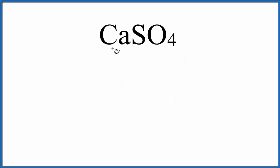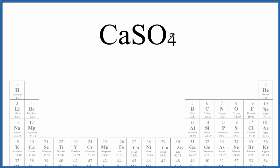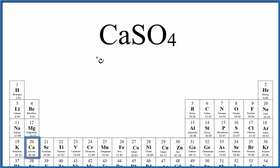For CaSO₄, that's calcium sulfate, we'll go to the periodic table. Calcium is 40.08 grams per mole, plus sulfur, 32.07, plus oxygen is 16.00 grams per mole, and we have the four oxygens.